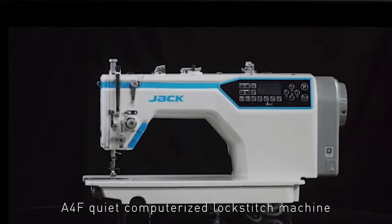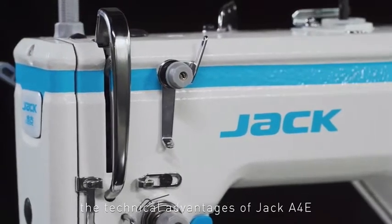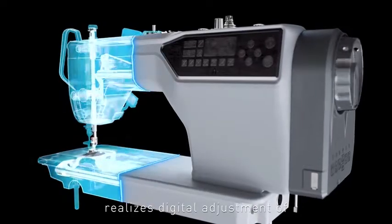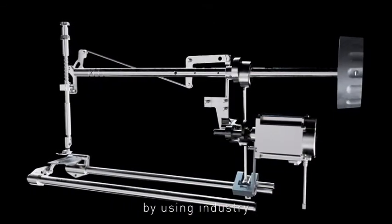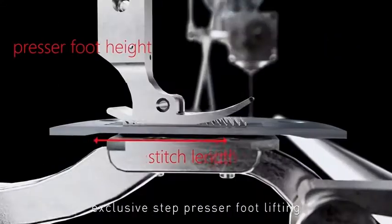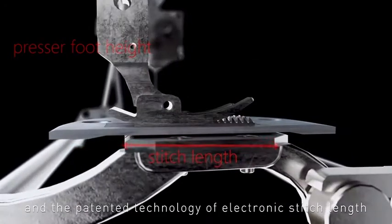The A4F Quiet Computerized Lockstitch Machine inherits the technical advantages of Jack A4E and realizes digital adjustment of presser foot lifting height and stitch length using industry-exclusive step presser foot lifting and patented electronic stitch length technology.